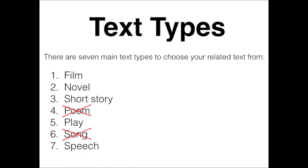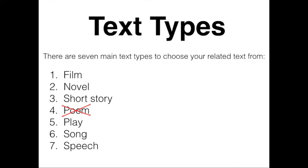I've also heard teachers suggest that unless you have a good knowledge of music, you should cross out song. Some students make the mistake of choosing a song as their related text and then only explore how the lyrics look at discovery. They don't talk about the instrumental component, the rhythm, the melody, the use of time, etc. I don't suggest you rule out songs straight away, but if you want to use a song as your related text and you don't have a good understanding of music, you need to learn. Go and talk about your song with a music teacher or someone who knows a lot about music, and learn how the composer uses different musical techniques to shape meaning.